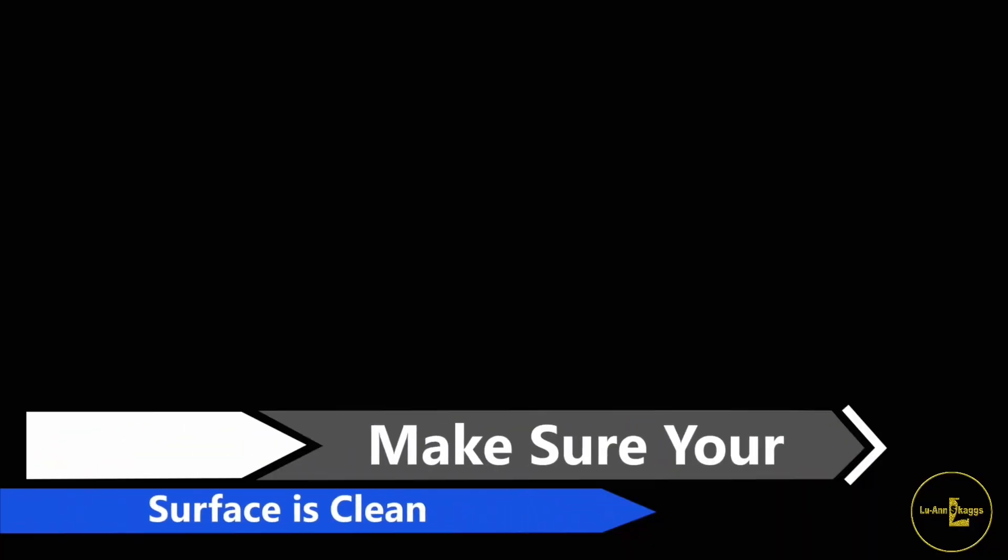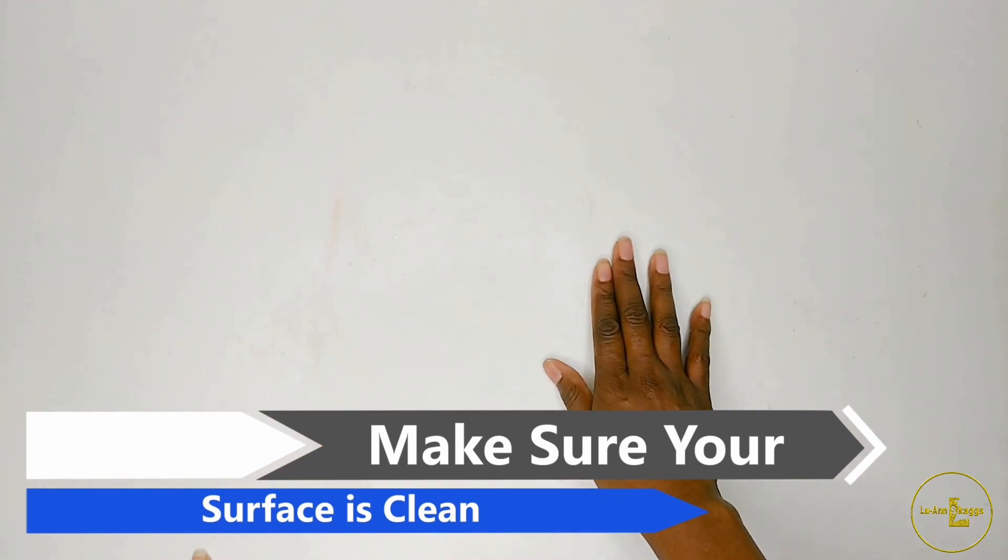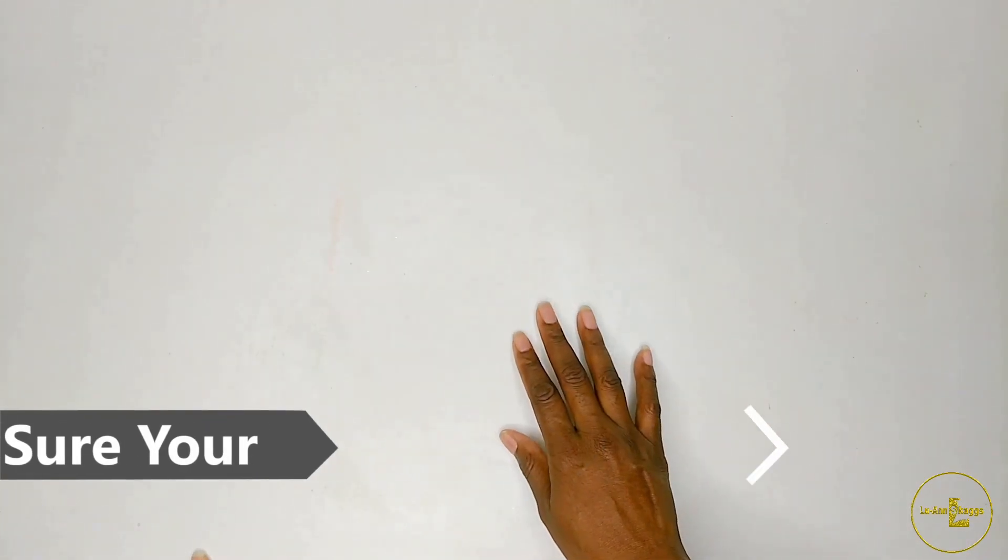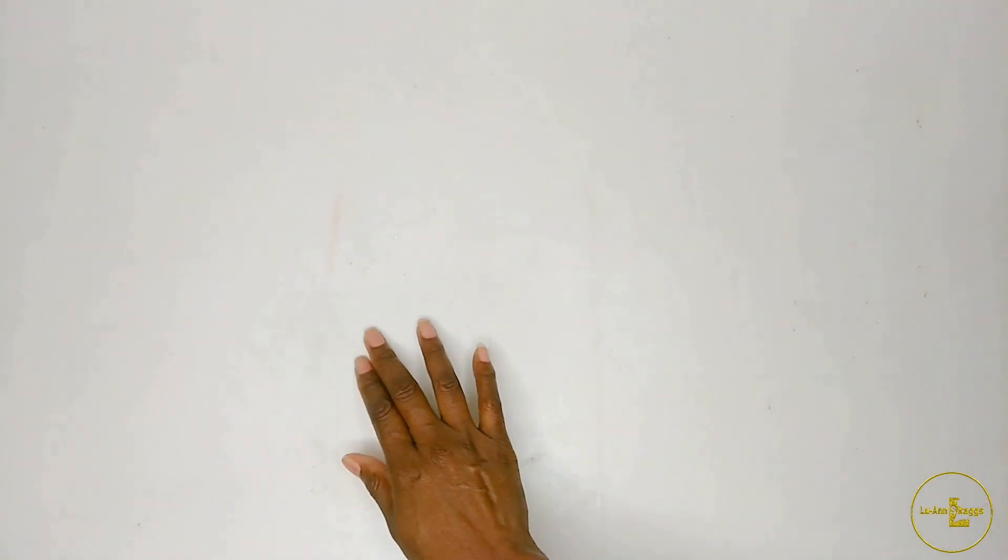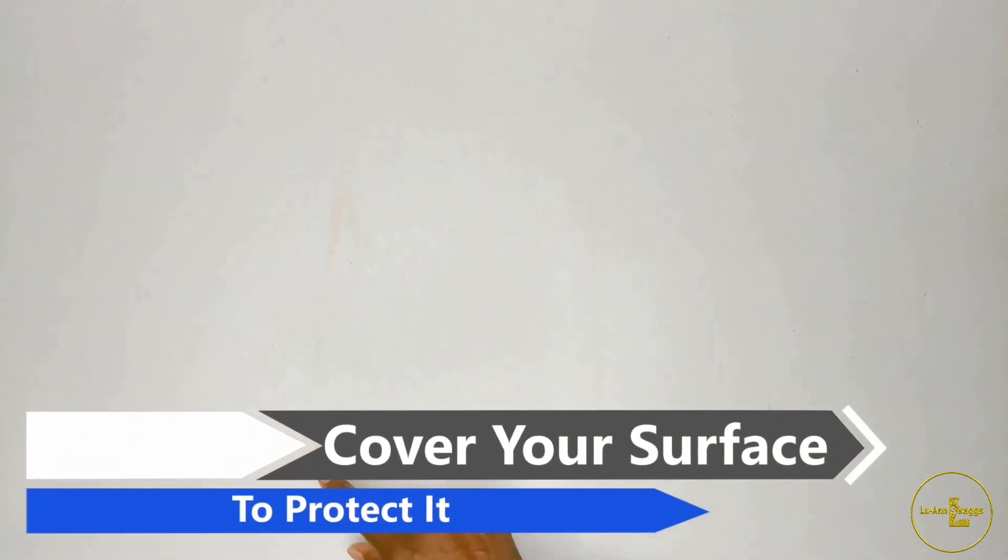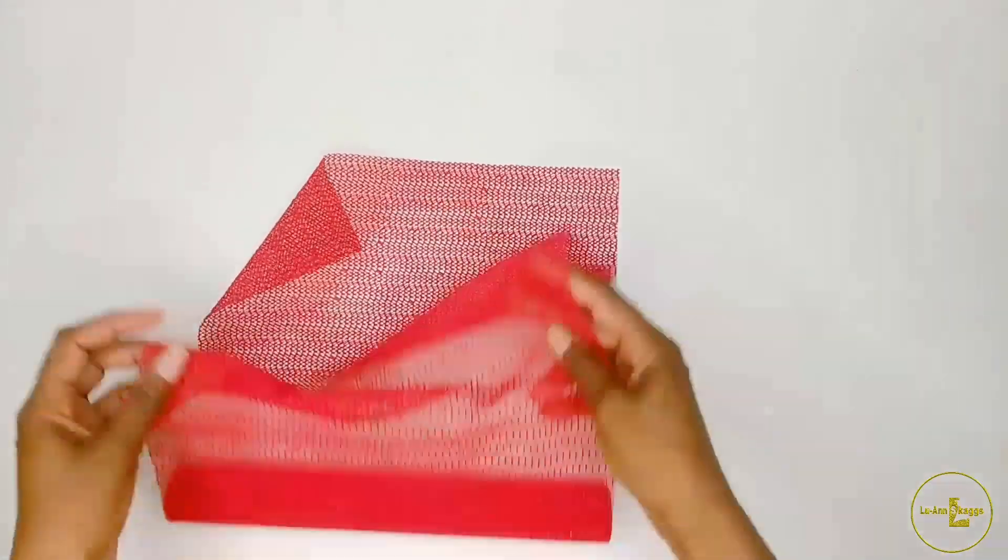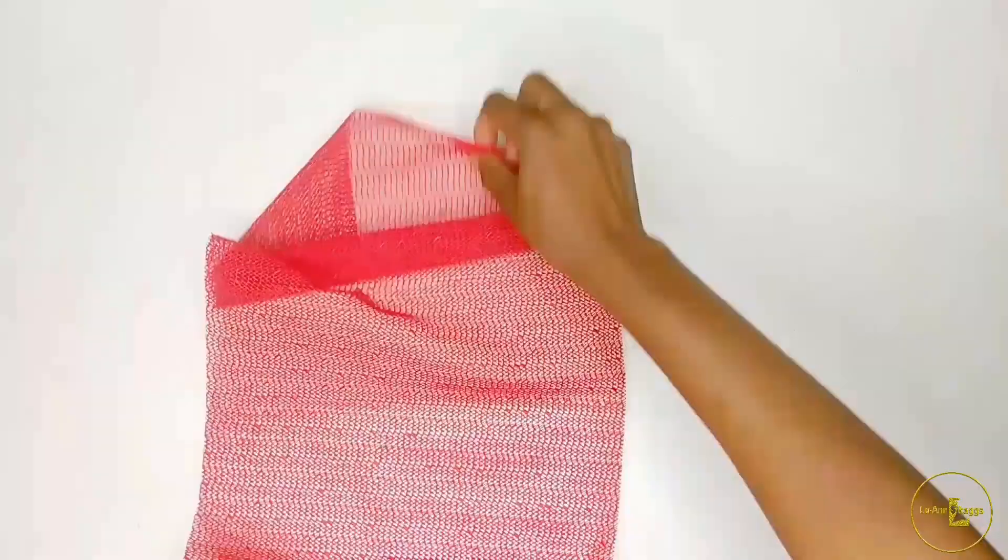Now you want to make sure and have a very clean surface to work from. You don't want any bumps or anything like that on your surface because it would crack the mirror. Now the mirror left some marks on my table. If you want to prevent marks on your table, you want to cover your surface and protect it. So I'm going to use this red mesh that I bought from the Dollar Tree to cover my surface and protect it.